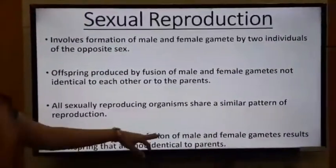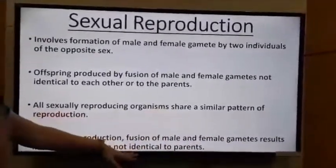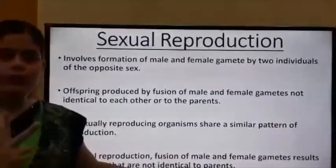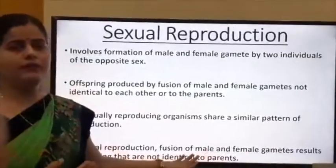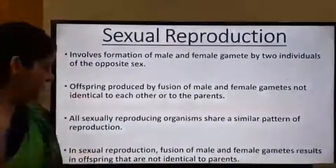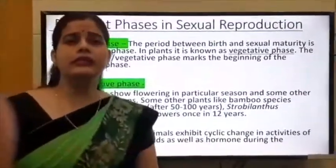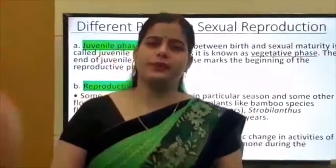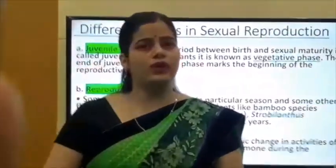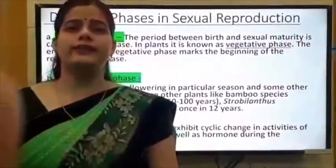In sexual reproduction, fusion of male and female gametes results in offspring that are not identical to the parents, because the zygote is a combination of half chromosomes from male and half from female. Sexual reproduction is a sequential process, so there are different phases: first the juvenile phase, then the reproductive phase, and finally the senescent phase.